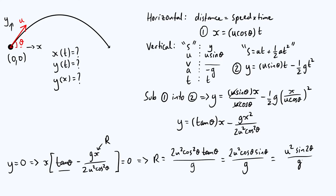One thing we can immediately notice from that expression is we can find what angle gives the biggest possible range. The sine function oscillates between −1 and 1, so to maximize sin(2θ) we want it to equal 1, which requires 2θ = 90°, and therefore θ = 45°. So the optimal launch angle for maximum range is 45°. I hope this has been useful, and I'll see you again shortly to look at the case where there is air resistance.